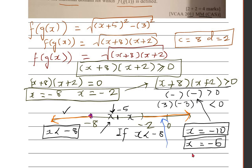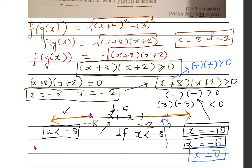Finally, let's test the region to the right of -2. Take x = 0 or any positive number. Both (x+8) and (x+2) will be positive, so the product is positive. Therefore we accept this region. The answer is x ≤ -8 or x ≥ -2.